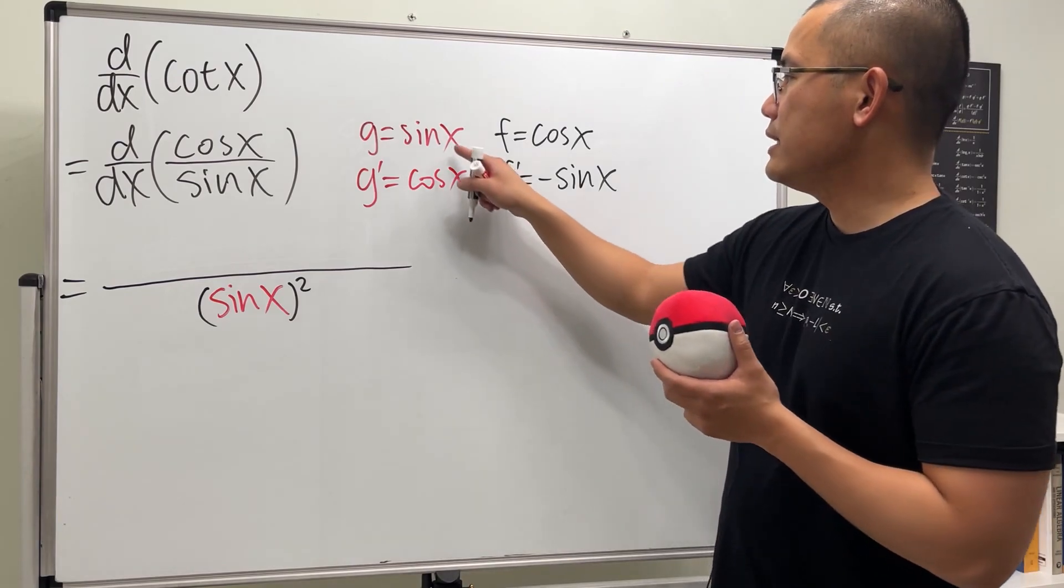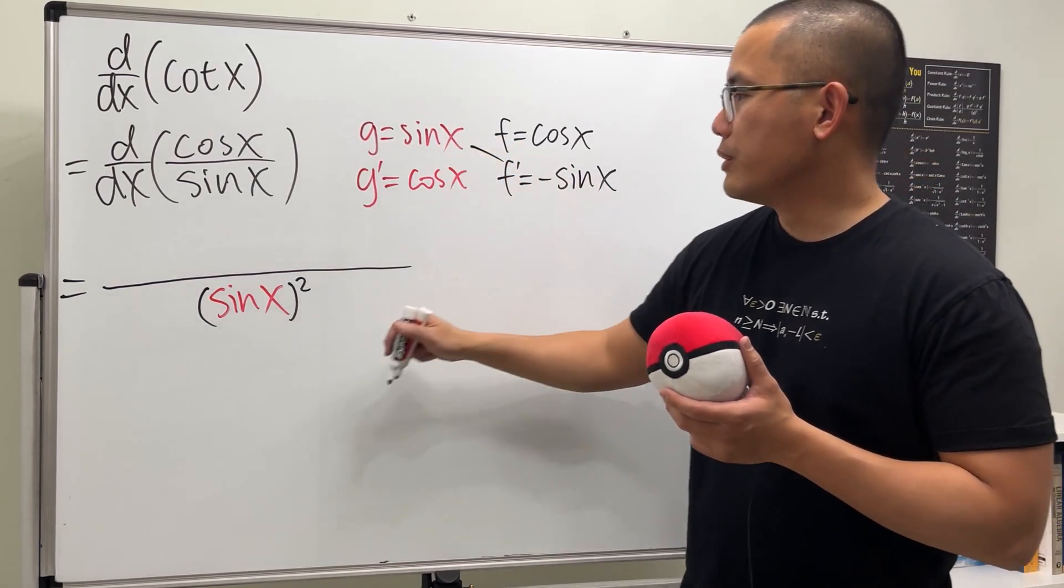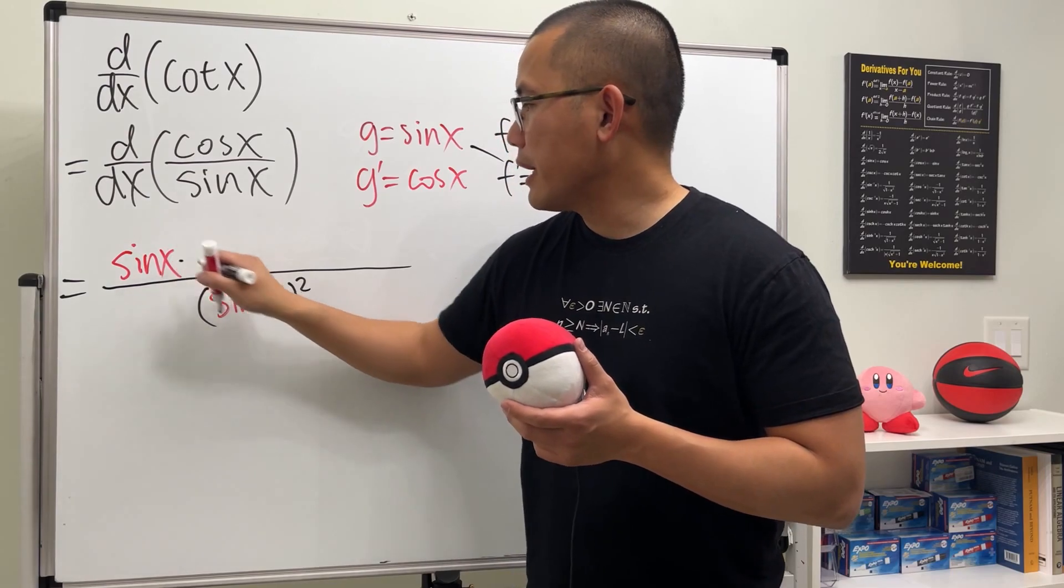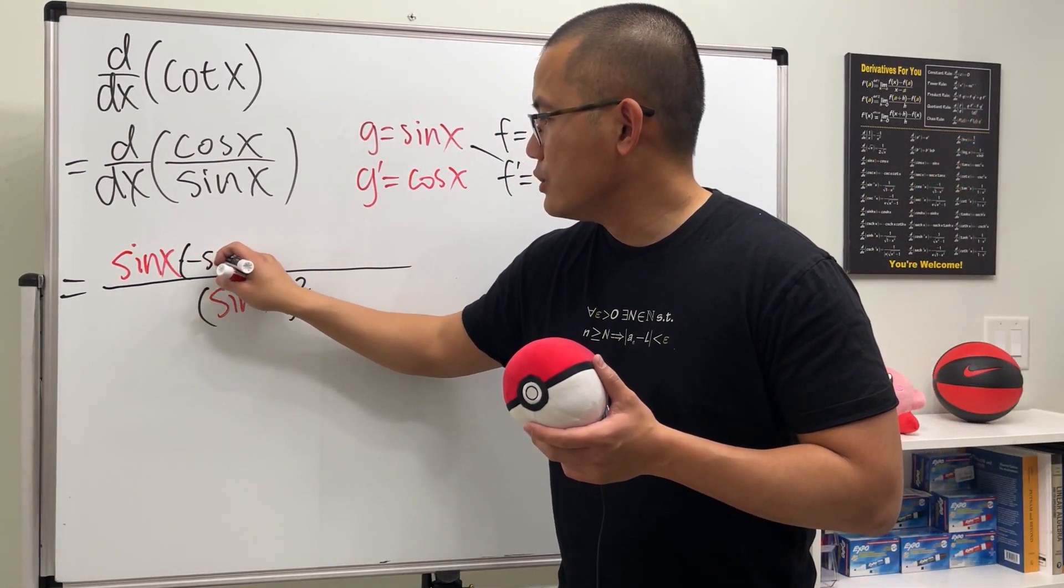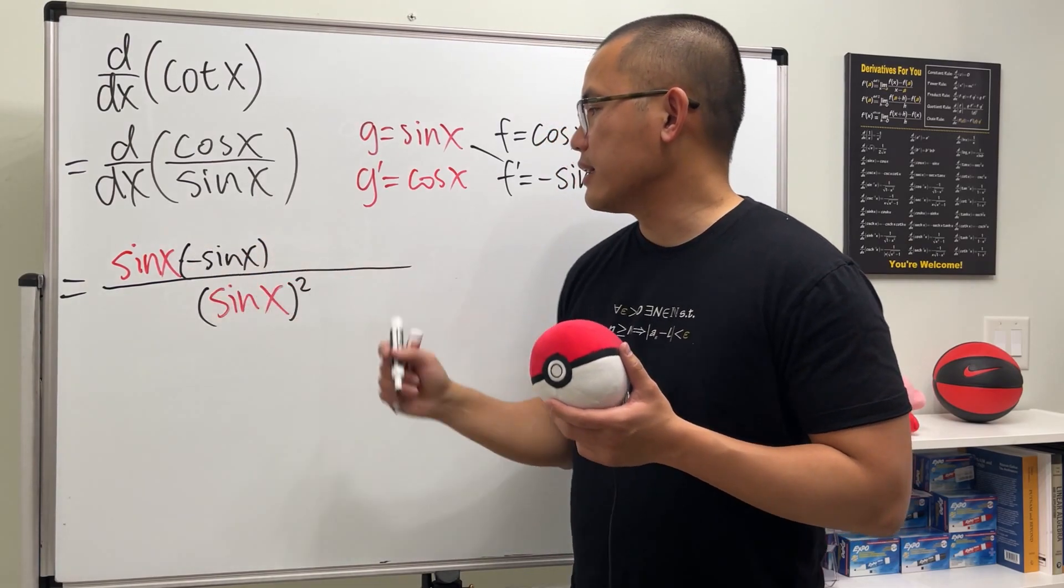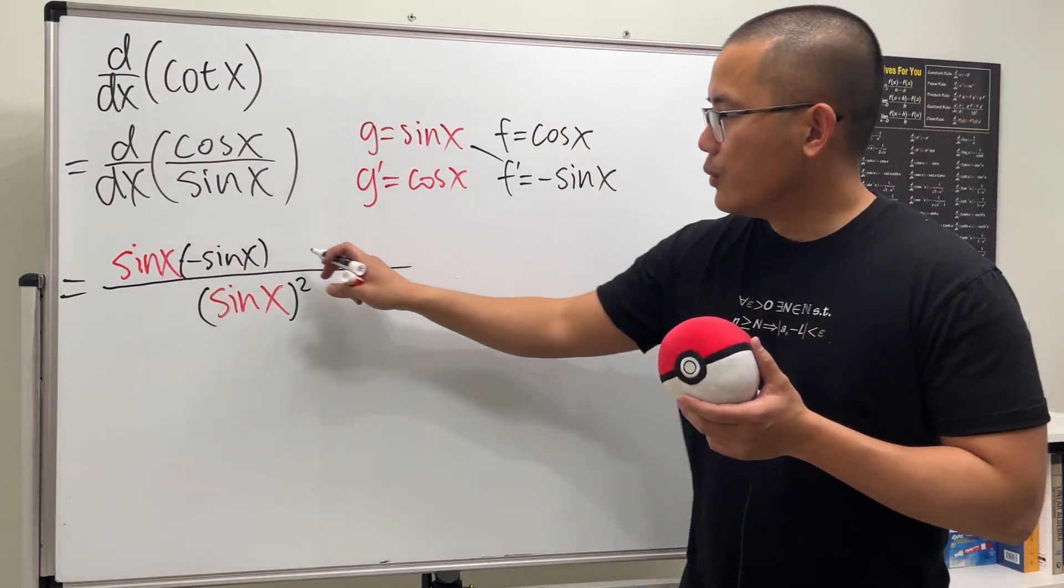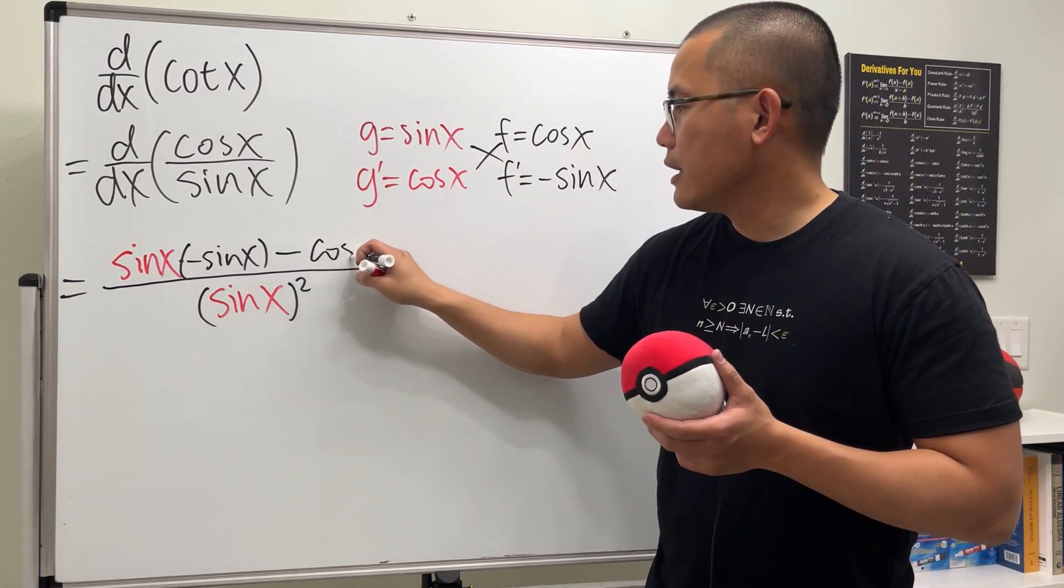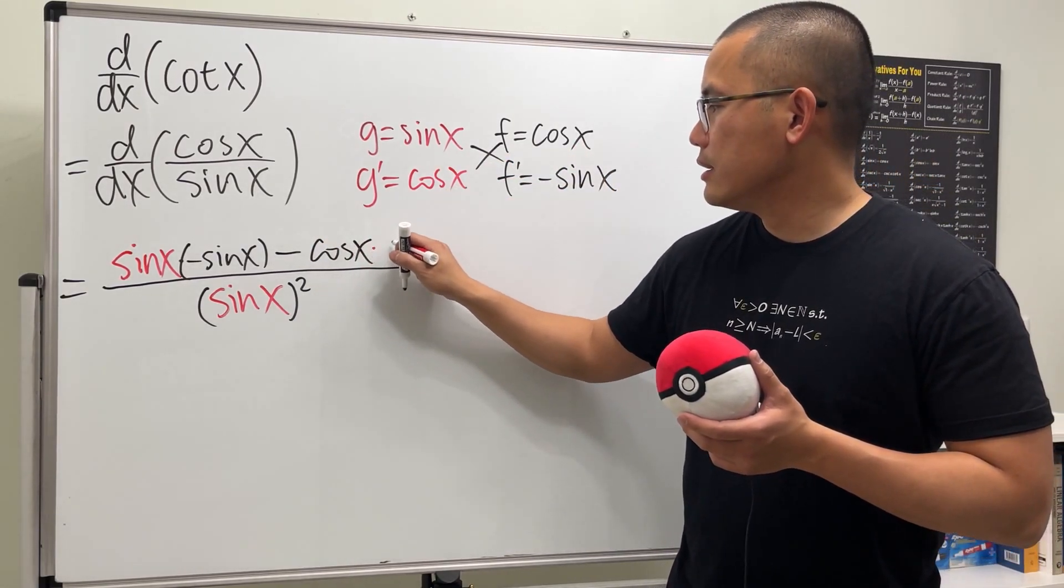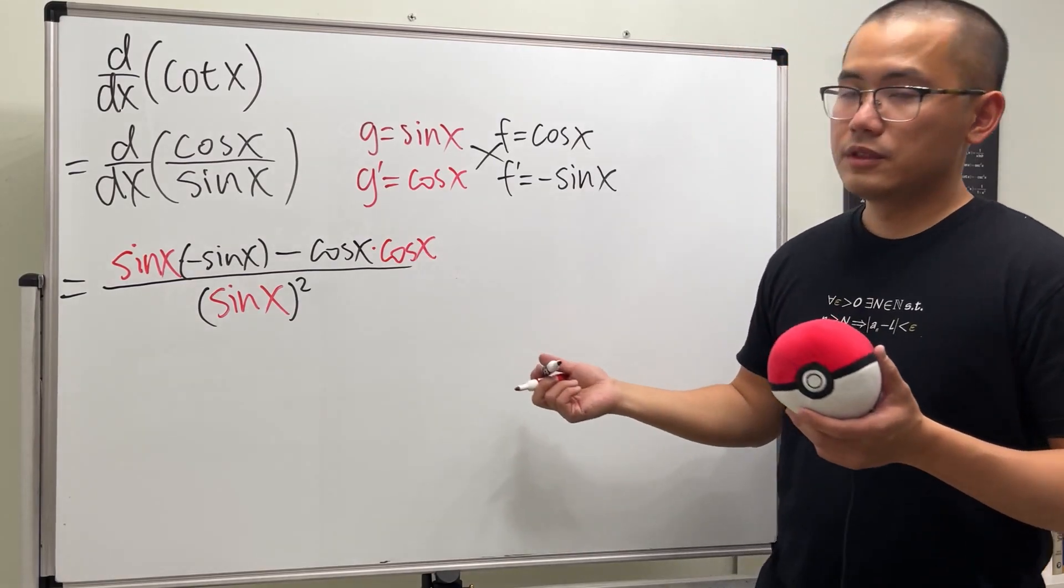Next, we see that we do this times that. So I will put down the sinx right here. And we multiply this by negative sinx. So perhaps I'll put down parentheses just to emphasize that we are multiplying a negative. And then next, we have to minus this times that. So we have cosx times this, cosx. So that's what we have.